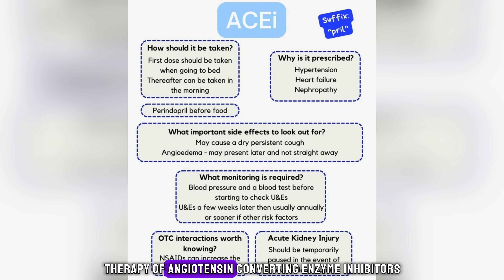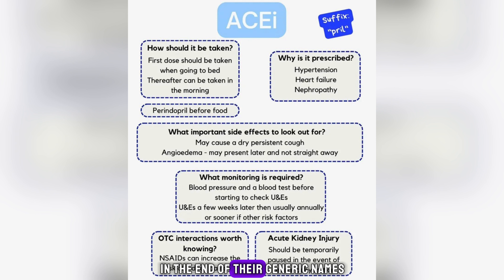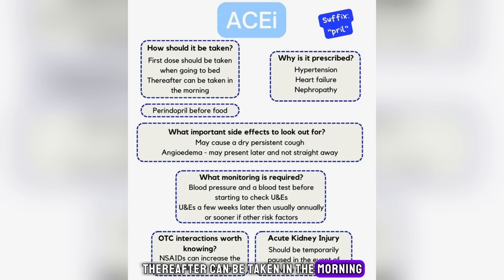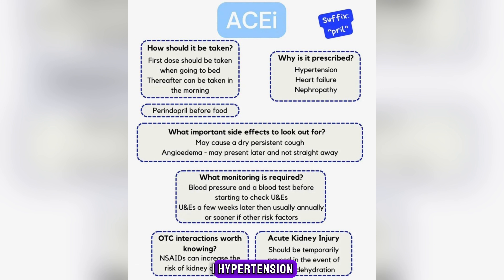Treatment therapy of angiotensin-converting enzyme inhibitors. These medications contain 'pril' at the end of their generic names. How should it be taken? First dose should be taken when going to bed; thereafter can be taken in the morning. Perindopril should be taken before food. Why is it prescribed? 1. Hypertension. 2. Heart failure. 3. Nephropathy.